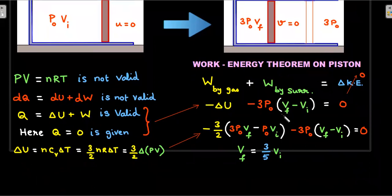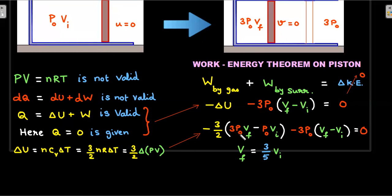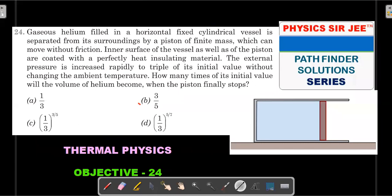Writing ΔU = nCvΔT = (3R/2)nΔT = (3/2)Δ(pV) = (3/2)(pf·Vf − pi·Vi). Substituting and rearranging, the p₀ terms cancel and Vf works out to (3/5)Vi. The answer is option B: Vf = (3/5)Vi. You cannot use pVᵞ = constant or pV = nRT during the motion because this is an irreversible process and intermediate states are undefined.